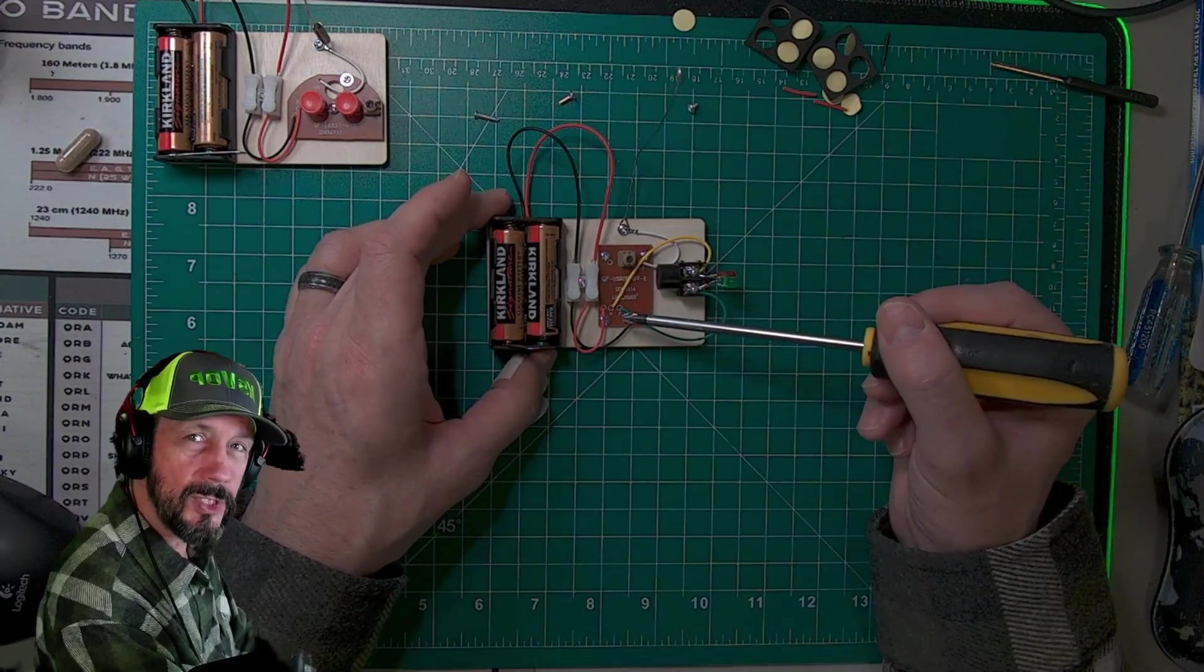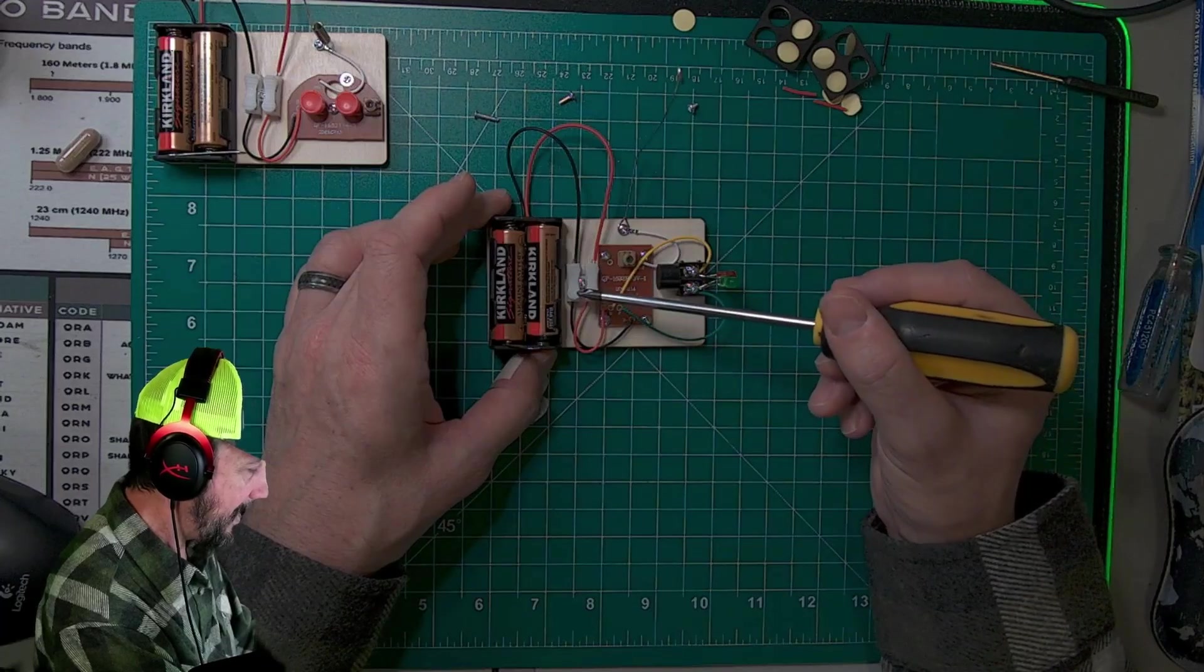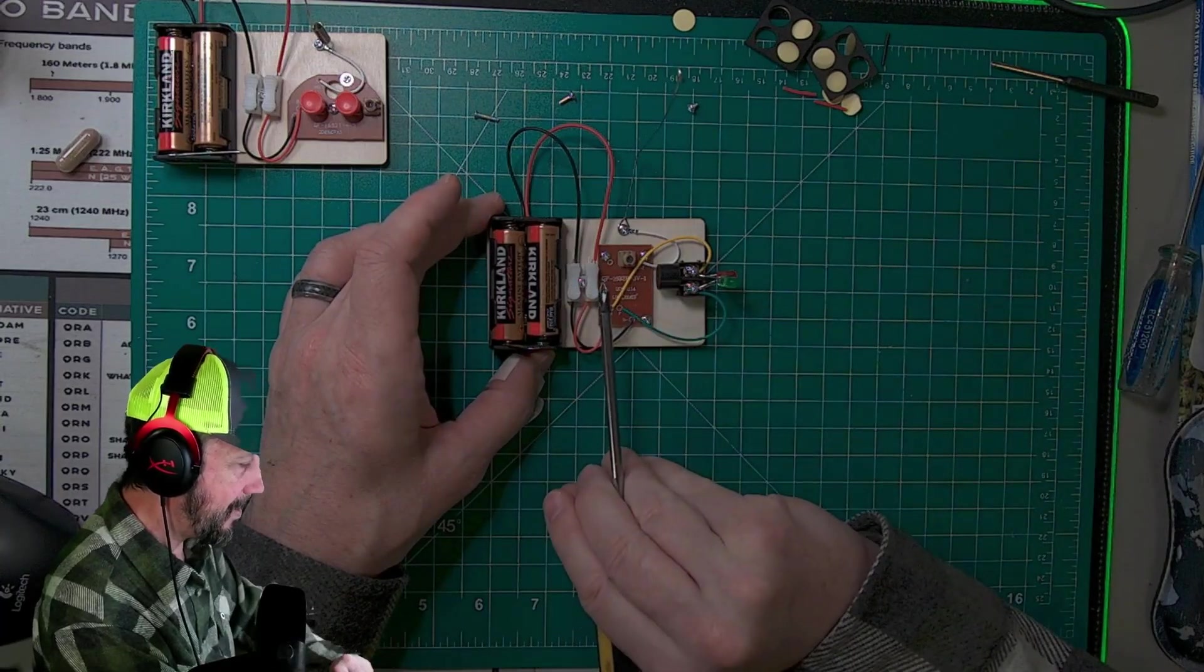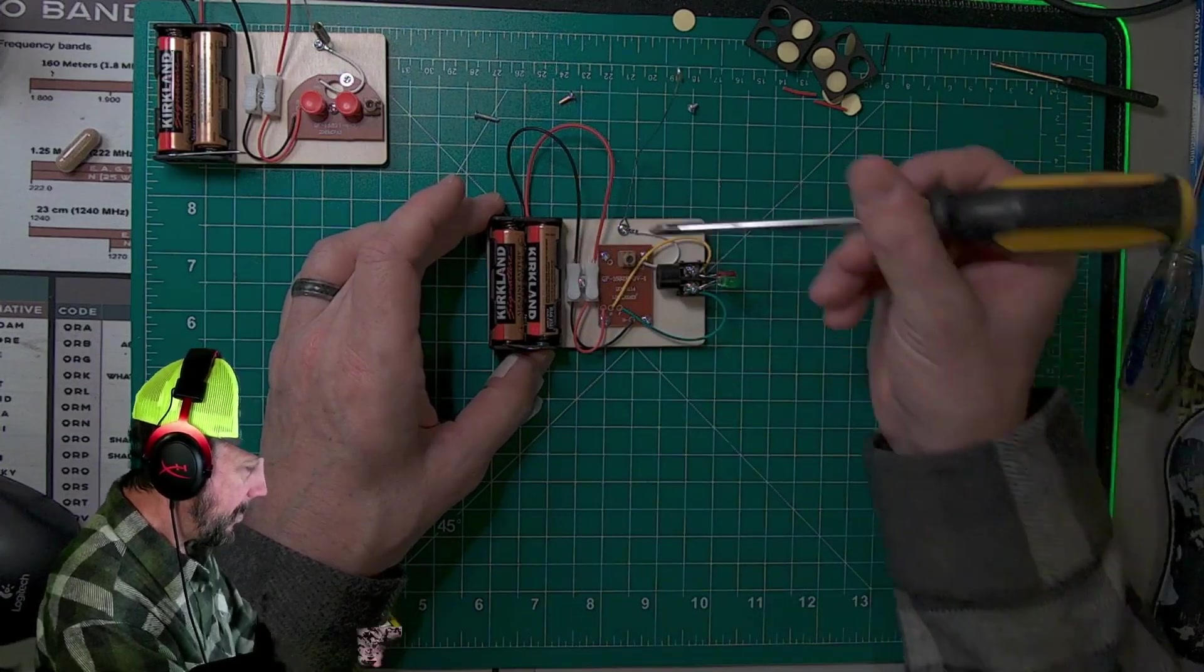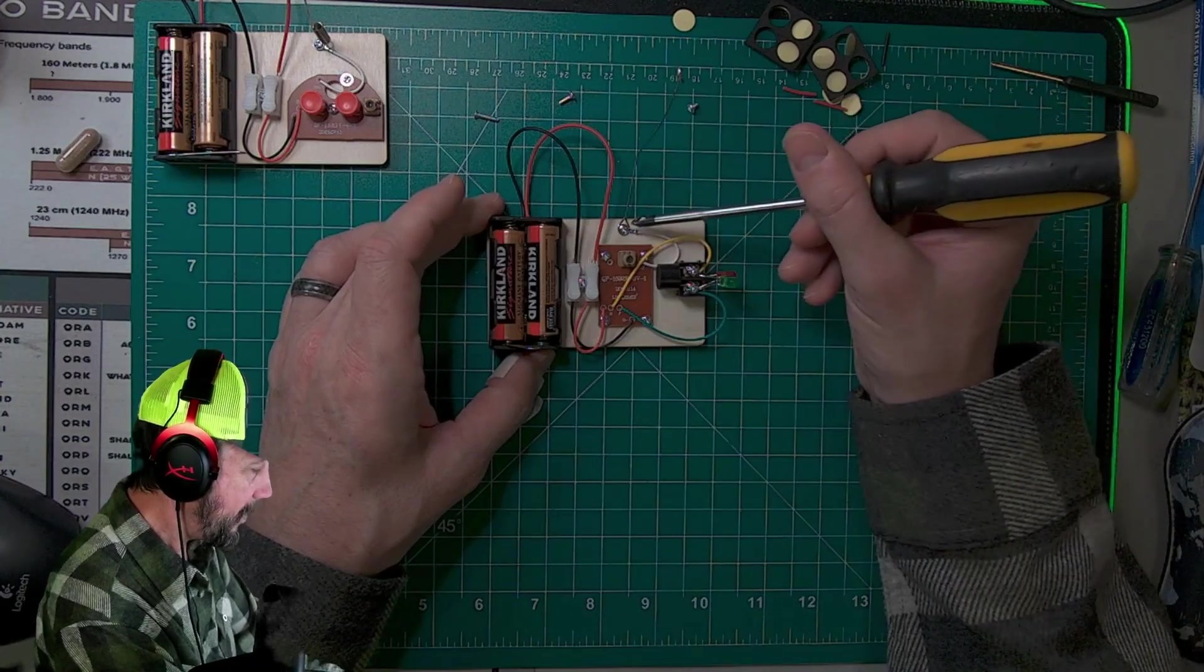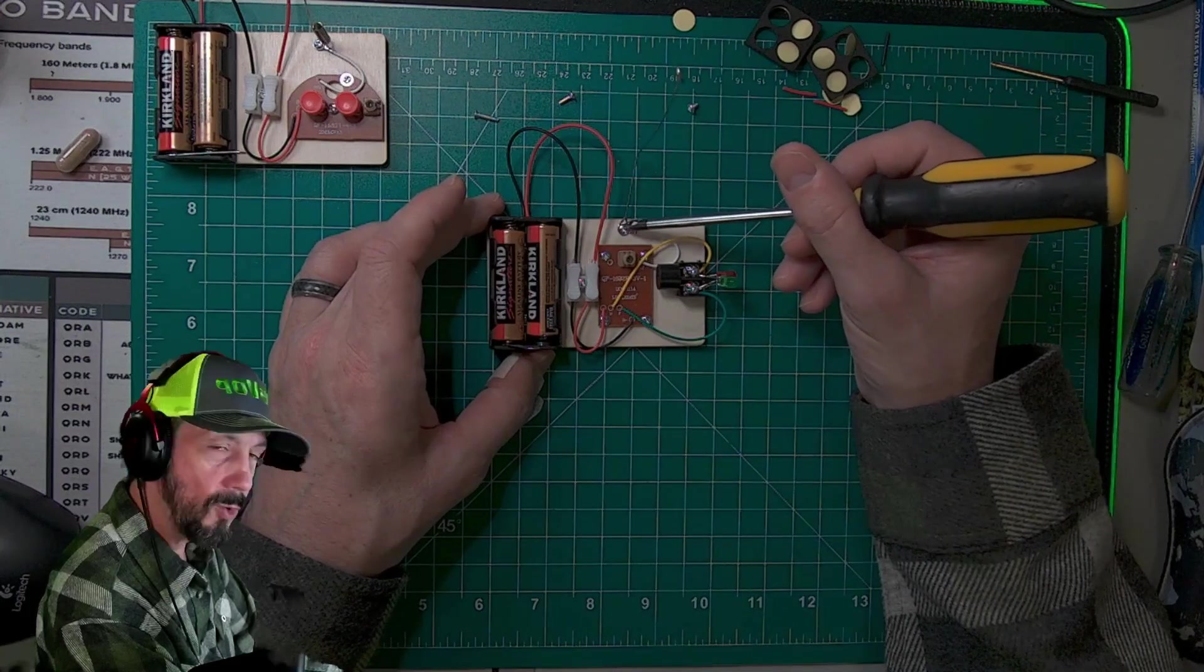So once you've got that in, you're going to do just like you did on the first board. You're going to run the red and the black into the wire connectors. Just push the side down, slide it into the slot, and the same with the battery wires. From there, you're going to do the same thing you did on the previous board. You're going to take the white antenna wire, a small screw, and the antenna, and you're going to screw that into the little hole at the top there.